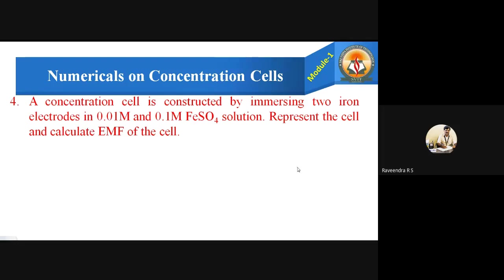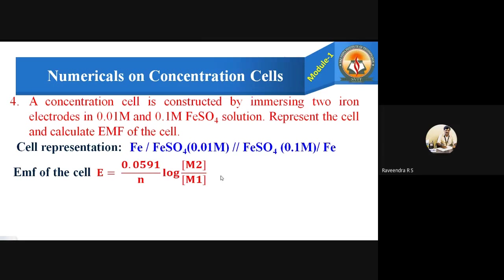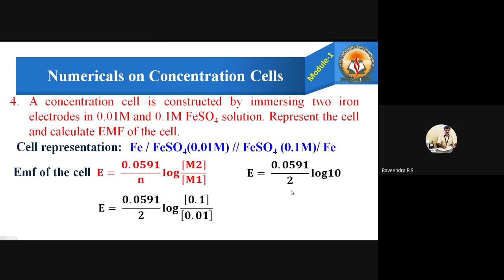The fourth problem: a concentration cell is constructed by immersing two iron electrodes in 0.01 molar and 0.1 molar ferrous sulfate solution. Represent the cell and calculate the EMF. Cell representation: Fe | FeSO4 (0.01 M) ‖ FeSO4 (0.1 M) | Fe. M1 = 0.01 M, M2 = 0.1 M, and n = 2 for iron (divalent). Applying the formula: E = 0.0591 / 2 × log(0.1 / 0.01) = 0.02955 × log 10 = 0.02955 volts.